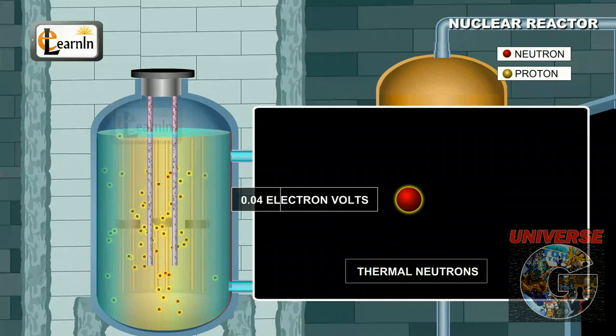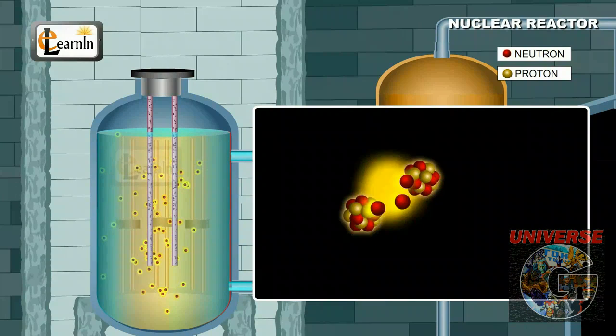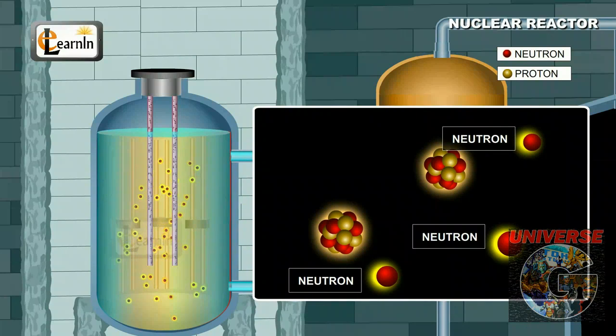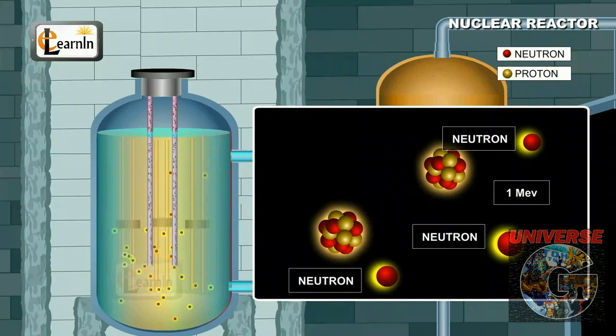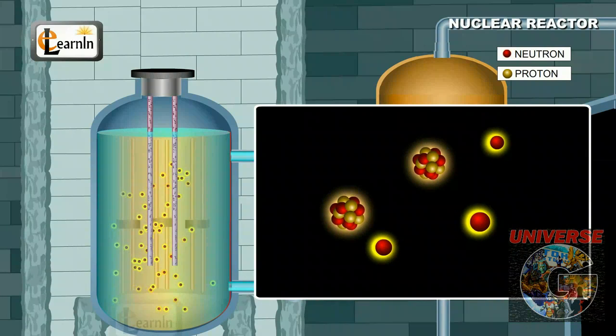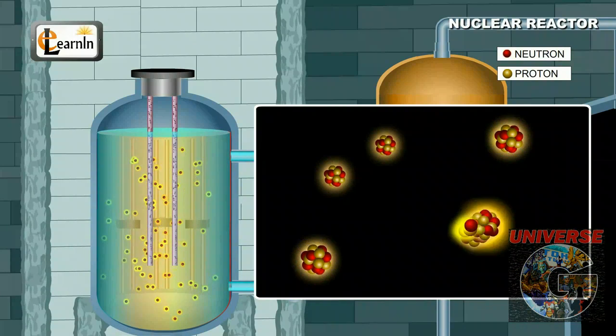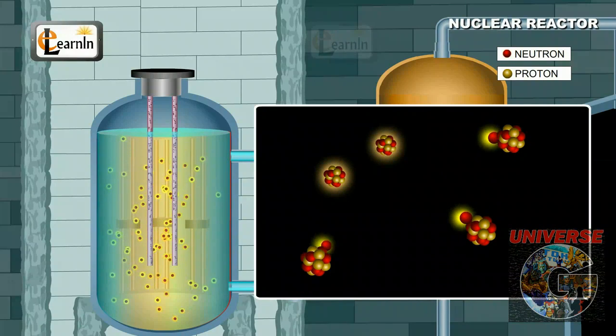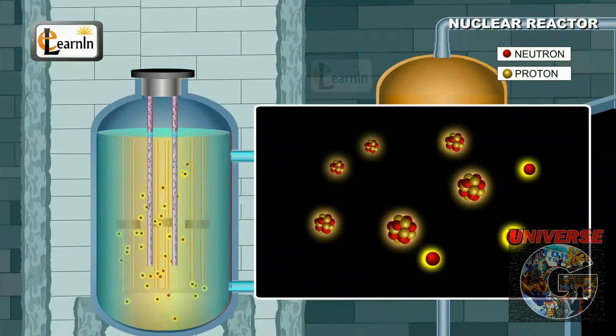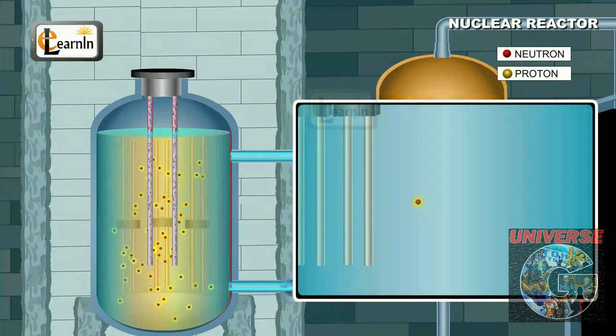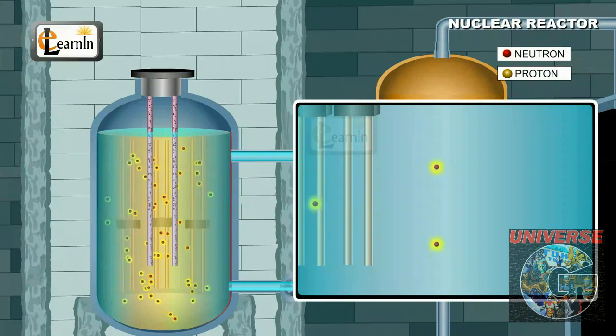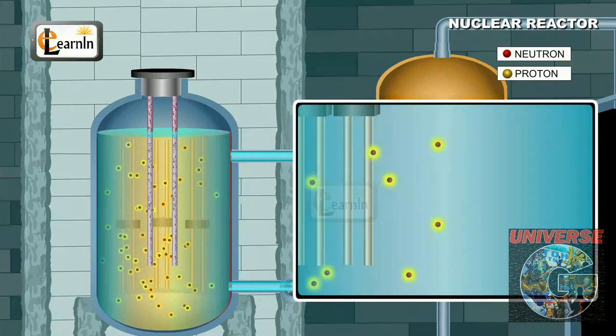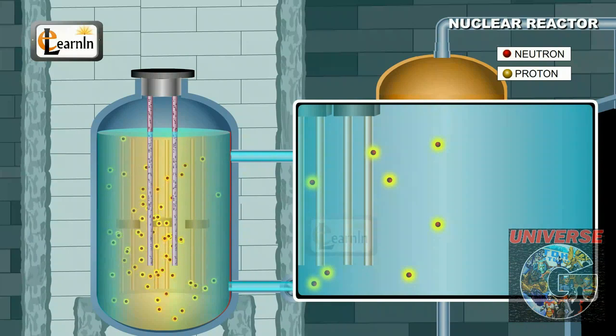Thermal neutrons, which are neutrons with energy of about 0.04 electron volts, are capable of producing fission reaction with uranium-235. During the fission reaction process, new neutrons are given out which have energies of about 1 MeV, or 1 mega electron volts. These neutrons typically escape from participating in another fission process as they are accompanied by enormous energy release. The probability of these neutrons producing another fission reaction is 500 times less than that compared to a thermal neutron. This is where a moderator is extremely useful.